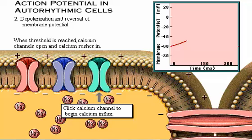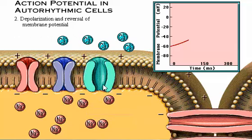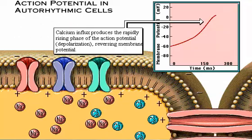When the membrane potential gets to minus 40 mV, it has reached the threshold for initiating an action potential. Calcium channels open, and positively charged calcium ions rush into the cell. The calcium influx produces the rapidly rising phase of the action potential — depolarization — which results in the reversal of the membrane potential from negative to positive inside the cell.